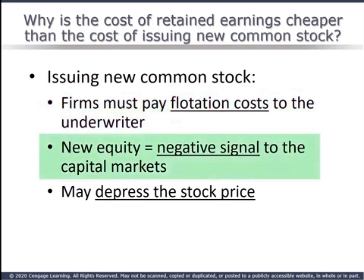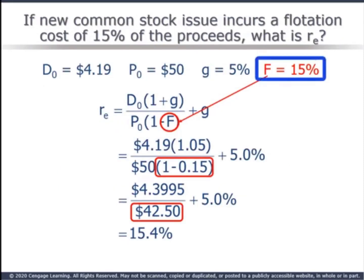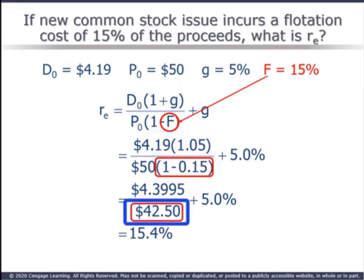When an established firm with common stock outstanding issues new equity, it's a negative signal to the market. The intuition is that it's the firm's last resort — there's a pecking order theory. A firm uses retained earnings first; if funds are still needed, they go to debt, which is less costly with no ownership dilution. Last resort is new equity. Stock prices move on news, and the announcement of a stock issue is news, not the actual issue. So when the issue is announced, the stock price may fall, requiring the firm to issue more shares to raise enough funds. Adjusting for flotation cost uses the DCF model, continuing our Coleman example with the addition of a 15% flotation cost.